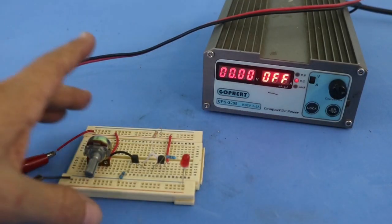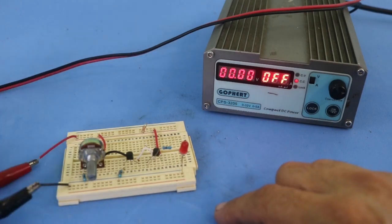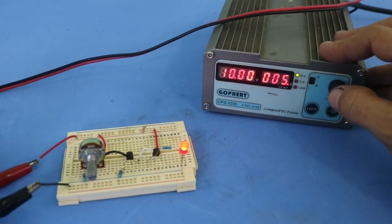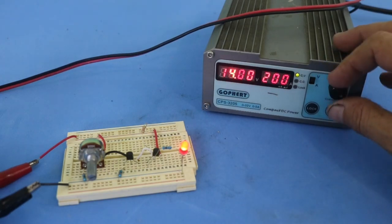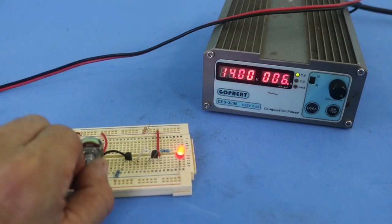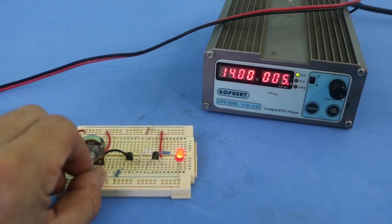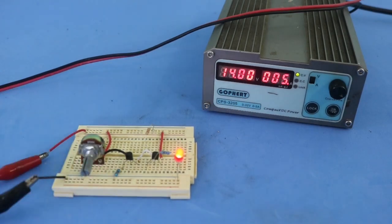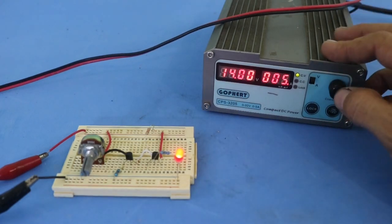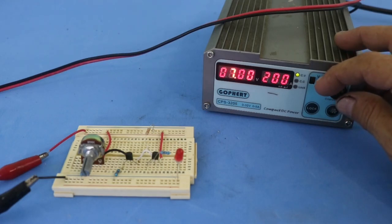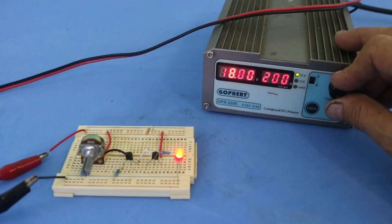Okay, now suppose that I want my LED to remain off and turn on at 14 volts. So I set 14 volts and move my potentiometer. There it is. And then the LED will be off if the voltage is less than 14 volts and then turn on when we reach the value of 14 volts.